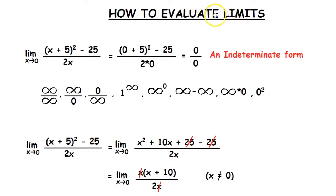When evaluating limits using the direct substitution method, most of the time we will get an indeterminate form. When we get an indeterminate form it means that the limit does not exist. Have a look at this example.